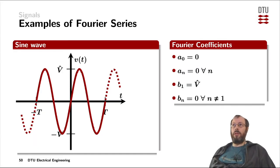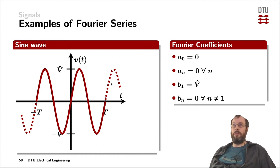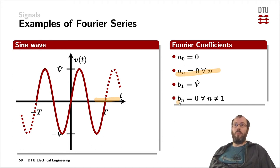Another example is a sine wave only. Since a sine wave is a direct part of the Fourier series, it's very straightforward. It doesn't have an offset — it's centered around the x-axis. All the contributions from all the cosines for all n's are zero, all the harmonics of the sine waves are also zero, and we have only the fundamental sine wave weighted by its amplitude factor V-hat, which is the amplitude of the signal in the time domain.